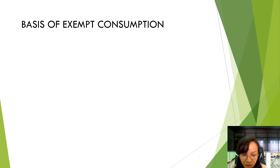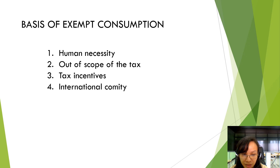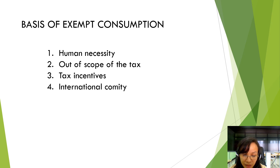The last slide is about the basis of exempt consumption. First, it is a human necessity — examples include foods and personal clothing. Second, out of the scope of tax: if the transaction is from non-resident seller to non-resident buyer, the tax law is inherently territorial, meaning we cannot impose taxes on those not within the jurisdiction of the Philippines. Third, tax incentives — the tax incentives and tax holidays for PEZA locators encourage operations because it will help increase the foreign currency reserves of the Philippines and increase their purchasing power. Lastly, international commitment or agreement: if the government enters into an international agreement, the Philippine government is bound to follow it.